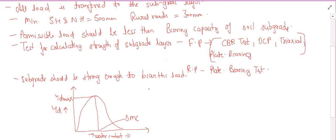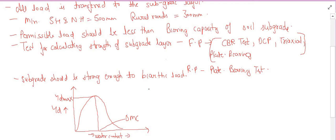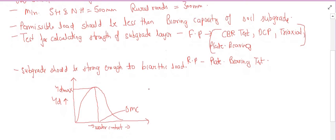So we compact the subgrade layer and ensure maximum dry density so that it is strong enough to bear the acting load. Those were the key points about the subgrade layer.